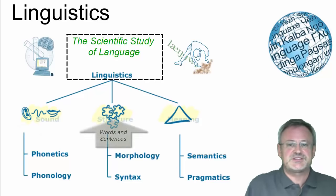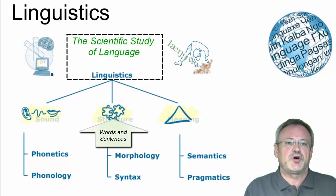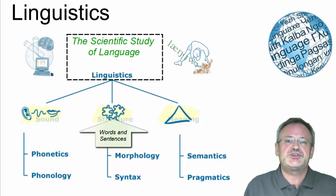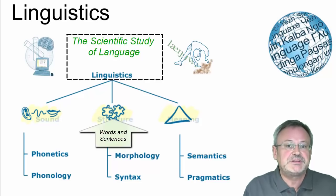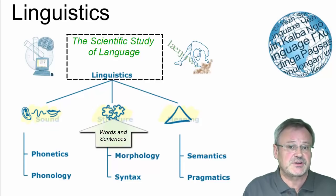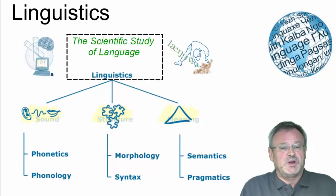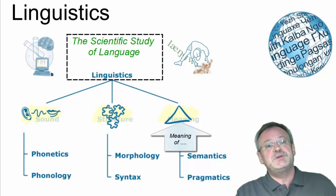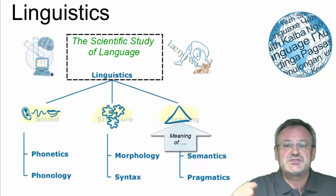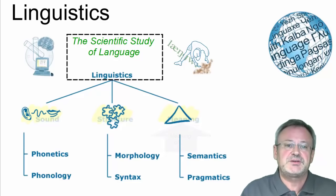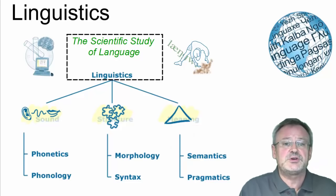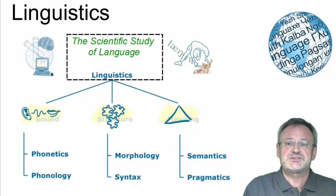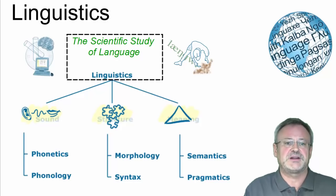The structure of words and sentences is the focus of the second branch, where morphology seeks to define how words are built and syntax is the study of sentence structure. The third branch is concerned with the study of meaning: the meaning of words and sentences, which is the focus of semantics, or the use of language and its effects, which is the goal of pragmatics.